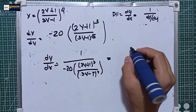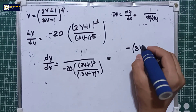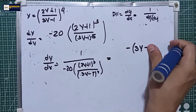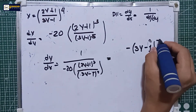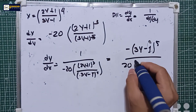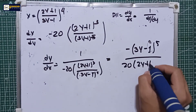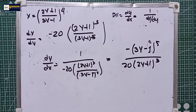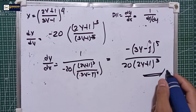This is also equal to negative (3y − 1) raised to the 5th, all over 20 times (2y + 1) cubed. So this is the final answer.